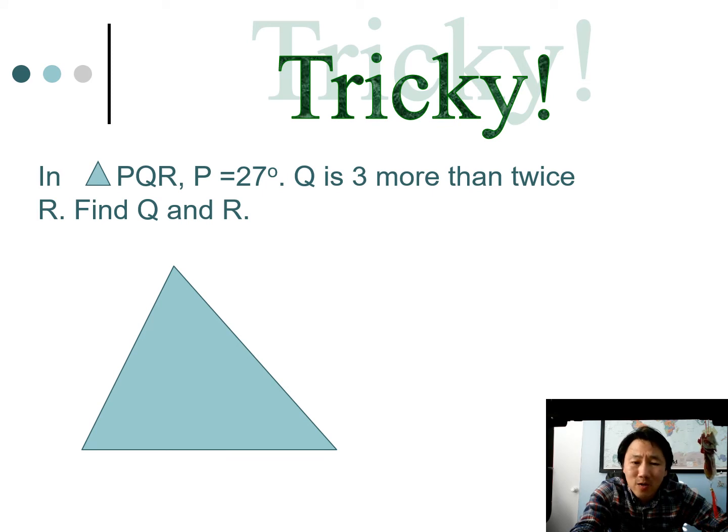Just start off with any triangle. It's probably not drawn to scale, but labeling it is important. I'm going to put P there, Q there, and R there. And for P, I'm going to put 27 degrees. But then it says Q is three more than twice R, so in the Q spot I'm going to have to come up with some sort of expression.